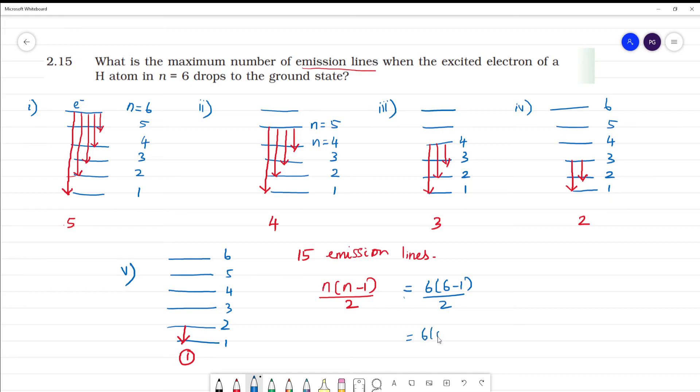6 into 6 minus 1 by 2. That is equal to 6 into 5 by 2. 30 by 2. So answer is 15. 15 emission lines.